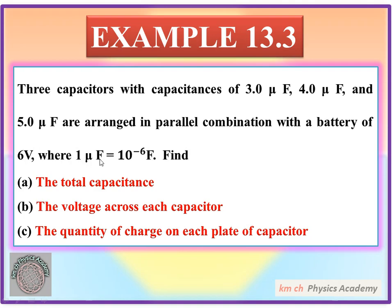Where 1 microfarad is equal to 10 to the power minus 6 farad. And we have to find: Number A — the total capacitance. The voltage across each capacitor. The quantity of charge on each plate of each capacitor.